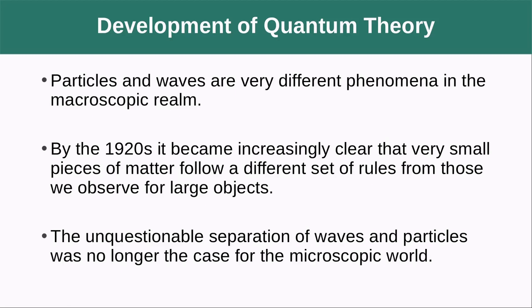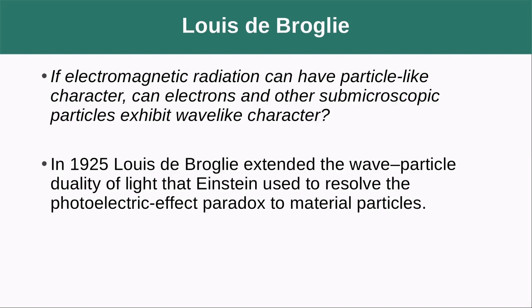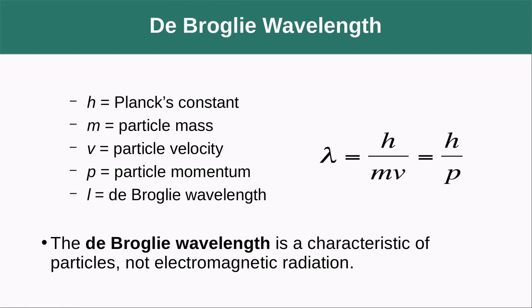Louis de Broglie asked: if electromagnetic radiation can have particle-like character, can electrons and other submicroscopic particles exhibit wave-like behavior? In 1925, de Broglie extended the wave-particle duality of light to material particles by defining the de Broglie wavelength as λ = h/(mv), which is Planck's constant divided by the mass times velocity, or momentum, of the particle.